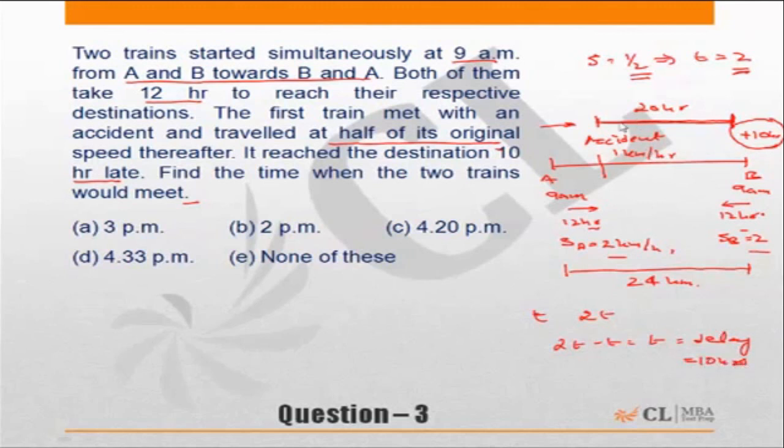So the distance has been covered by the train after accident in 20 hours. This distance would have been covered at normal speed in 10 hours. So at normal speed it would have taken 10 hours, now it has taken 20 hours. That means the accident happened 2 hours after it started.